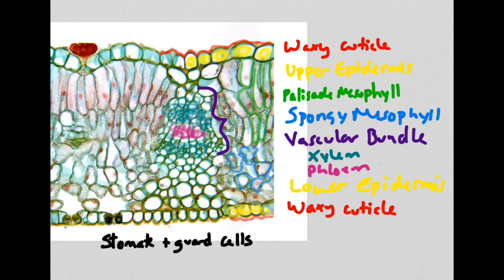The lower epidermis and the waxy cuticle on the bottom look very similar to what's on the top. Stomates are easy to see because they look a little bit different than the lower epidermis cells. You only find stomates on the lower surface of the leaf and never on the top.